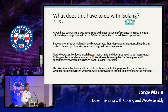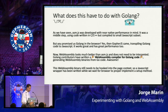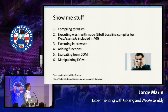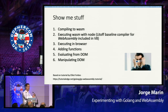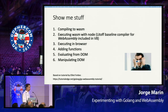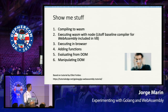That Wasm binary — which is a file — needs to be hooked into the page context so that it interfaces with JavaScript. You can then call JavaScript, modify the DOM, and perform actions with your web page. So now, the demo: we are going to compile a Go program into Wasm, execute that Wasm code with Node, execute it in the browser, add a couple of functions interfacing with JavaScript to read and manipulate the DOM. All the code is based on the tutorial by Elliot Forbes.